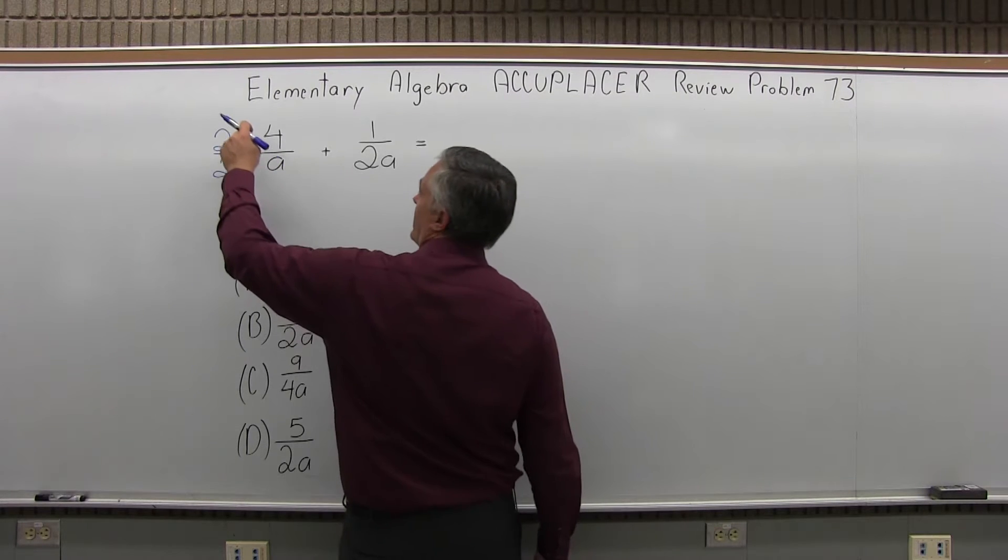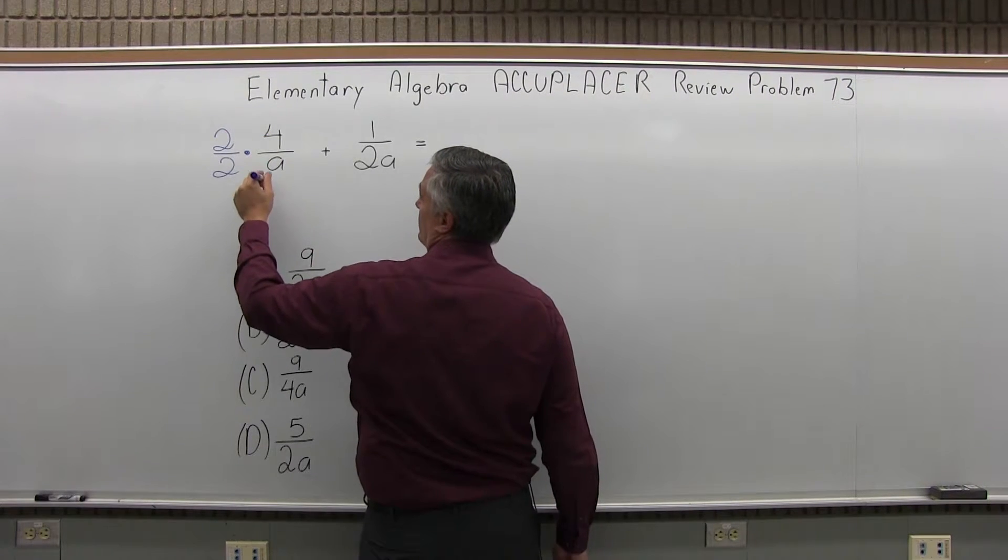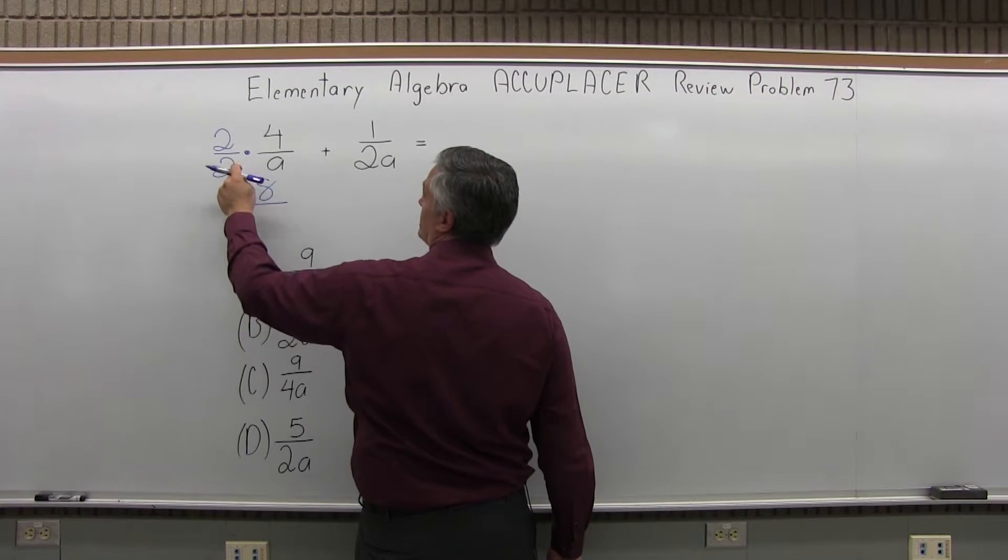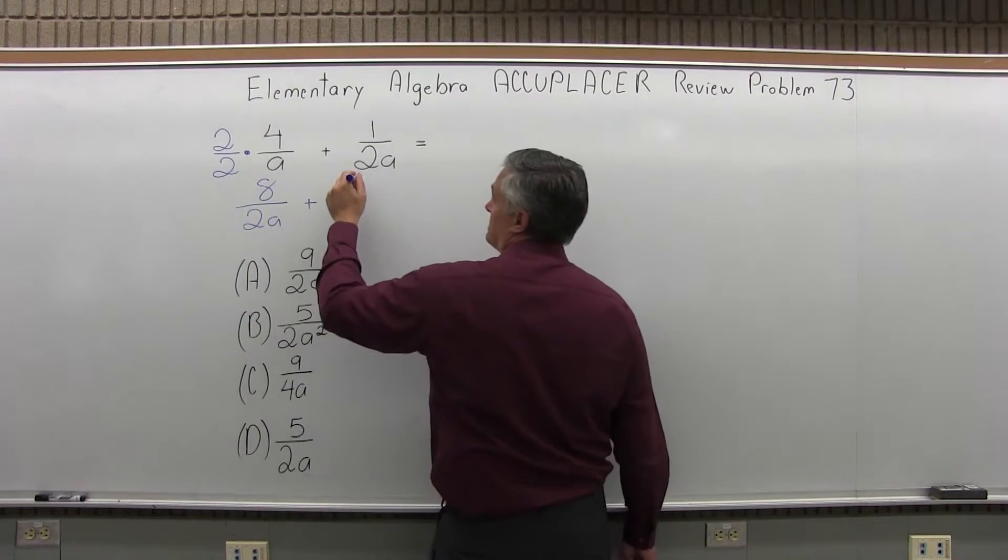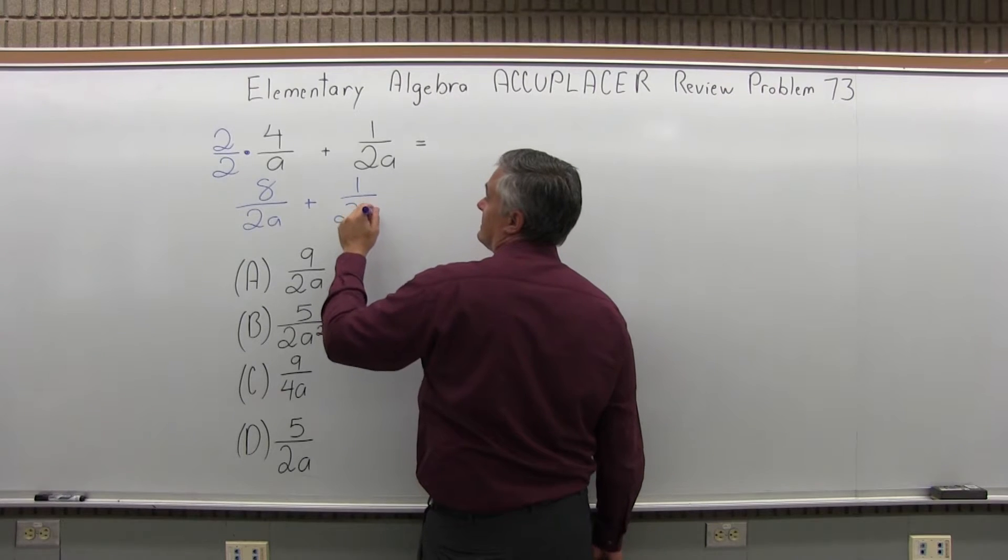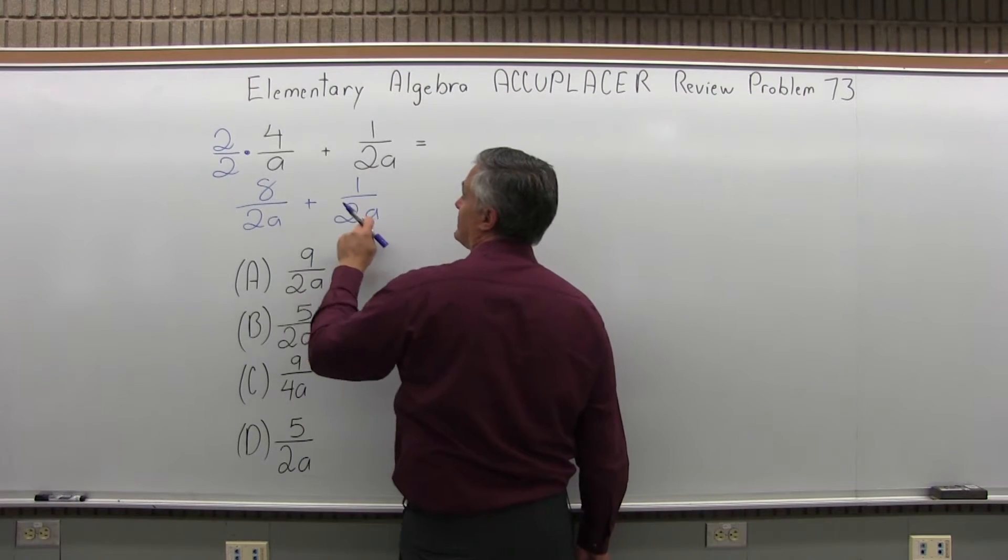So with that first fraction, top times top, 2 times 4 is 8. Bottom times bottom, 2 times A is 2A. And the second fraction, 1 over 2A, can stay the same. Now both fractions have the same denominator.